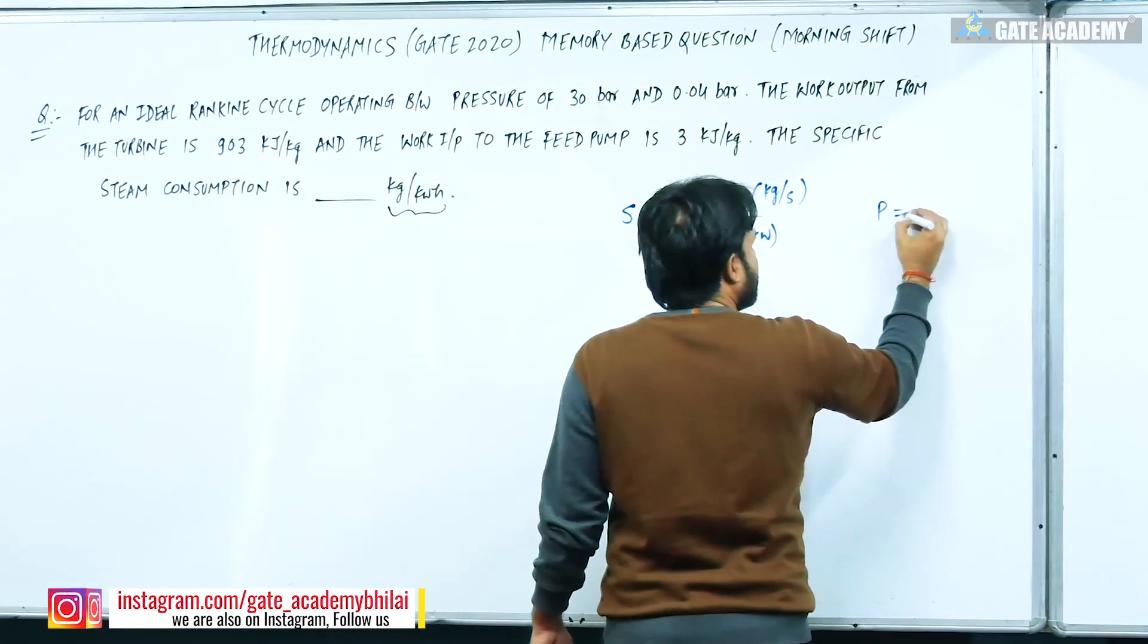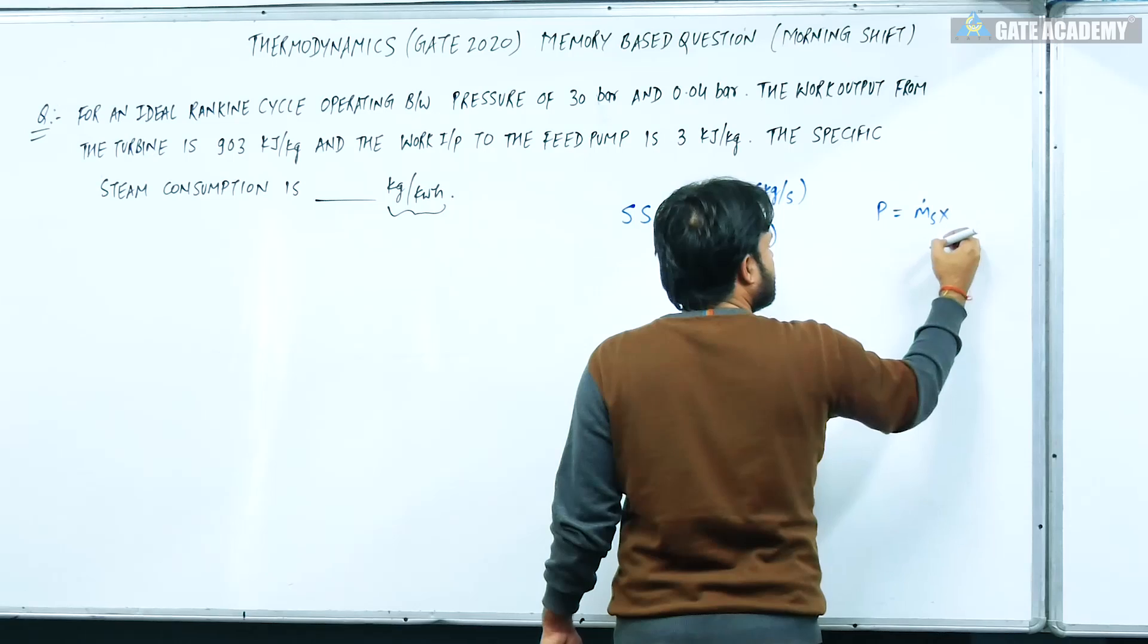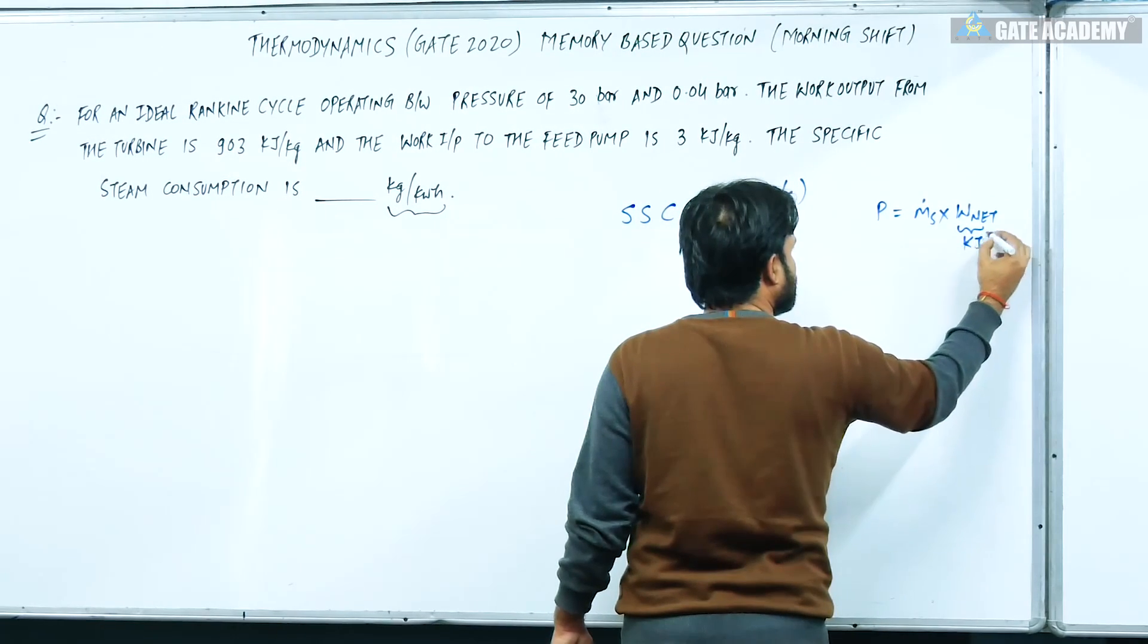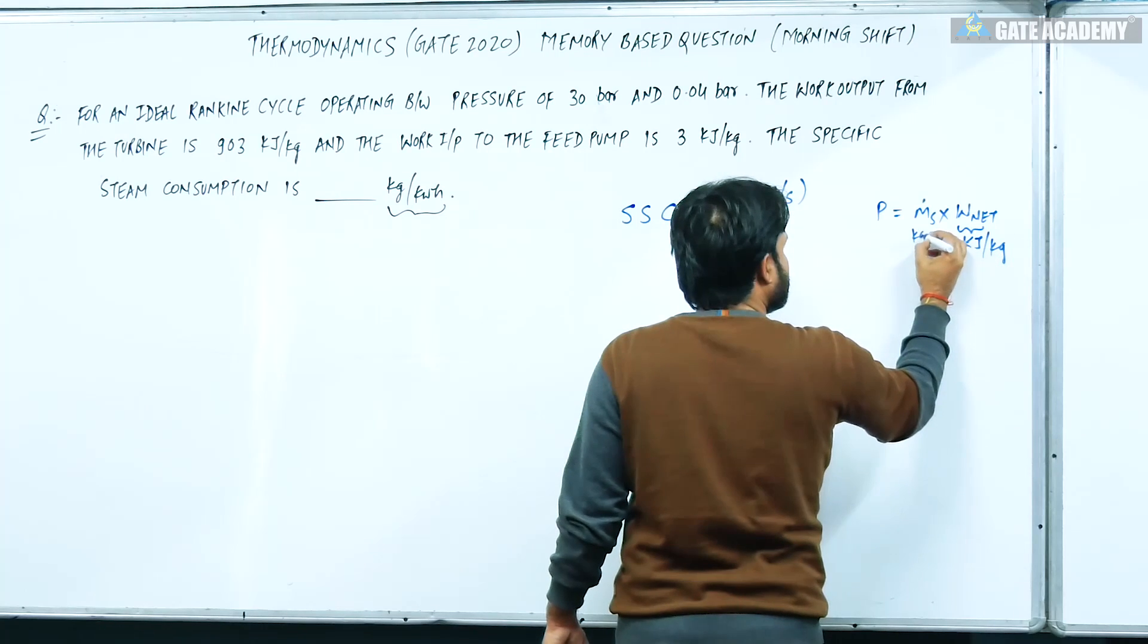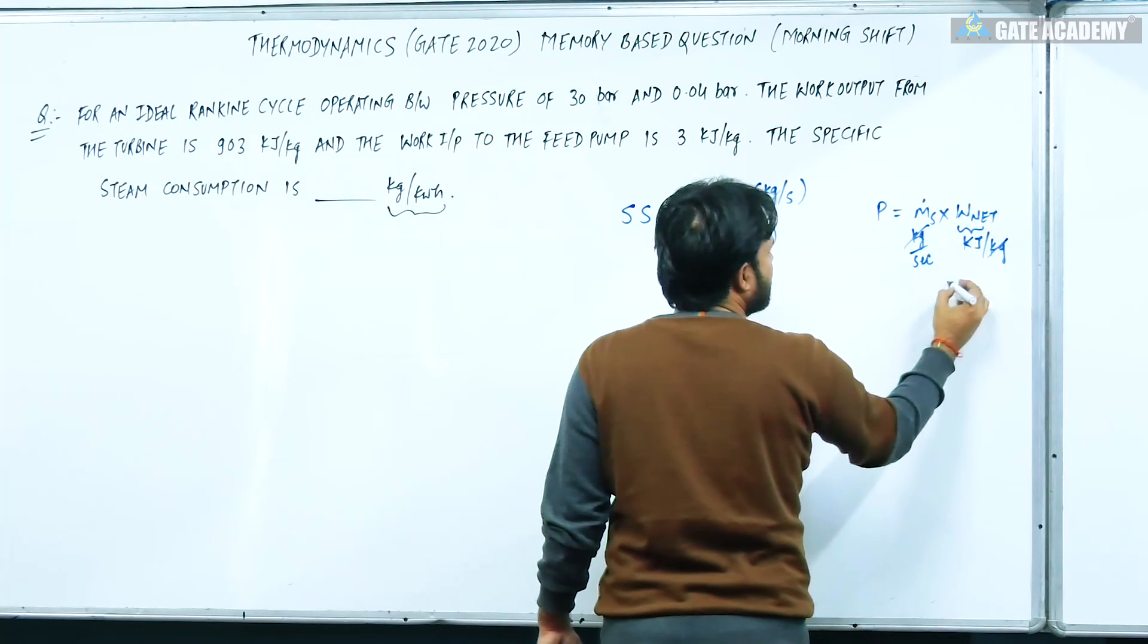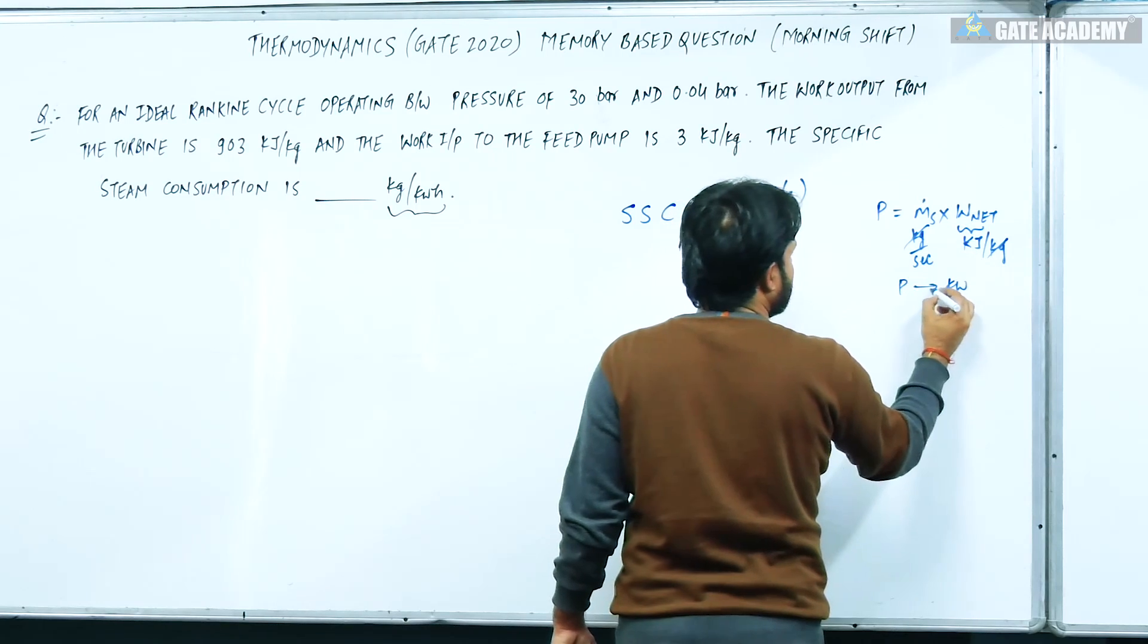If I talk about mass flow rate of steam, it's 1 upon W_net. Total work which is produced, and this value is kilogram per kg. This is kilojoule per second, so it will cancel from kilojoule per second. What will you find? Kilowatt.